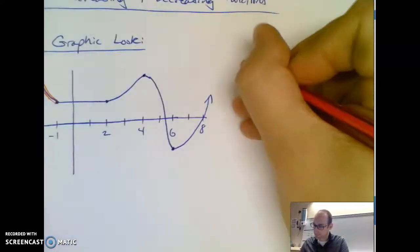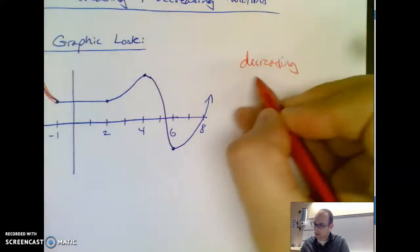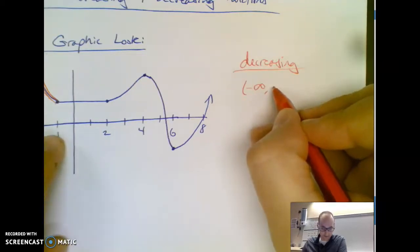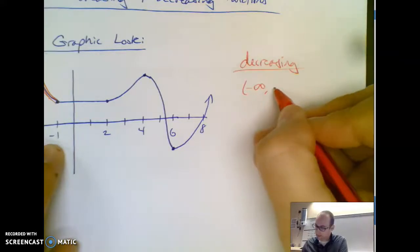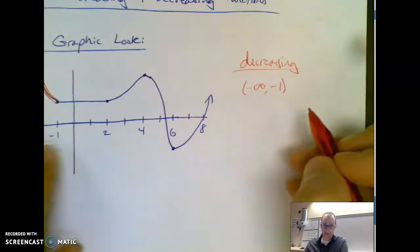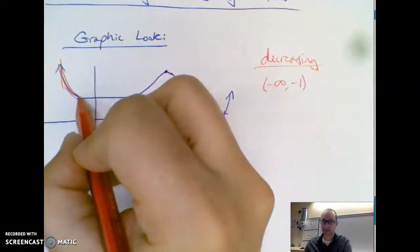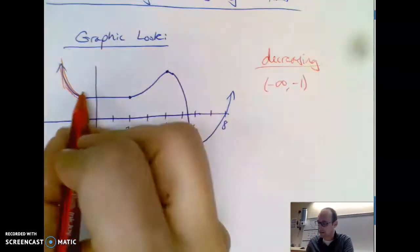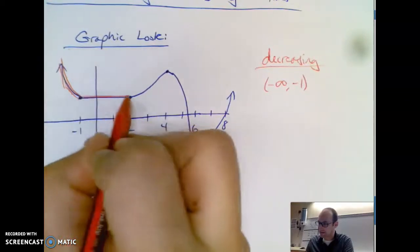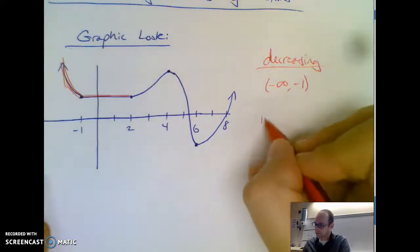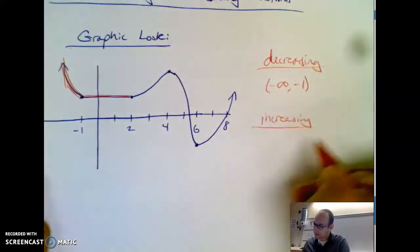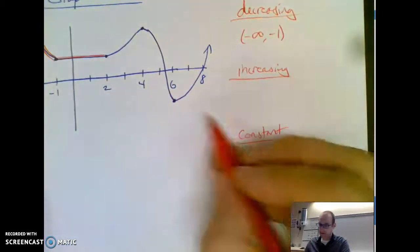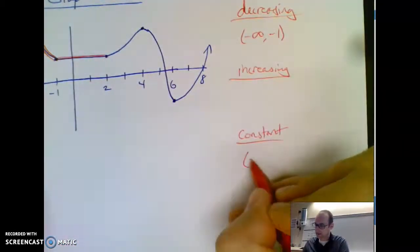So I'd say this graph is decreasing on the interval from negative infinity to negative 1. Usually we put parentheses because we don't say the points where it changes are either increasing or decreasing — they're kind of an in-between point. Then there's a straight line across — this is neither increasing nor decreasing, so we say the graph is constant, and I list the x-values it's constant from.